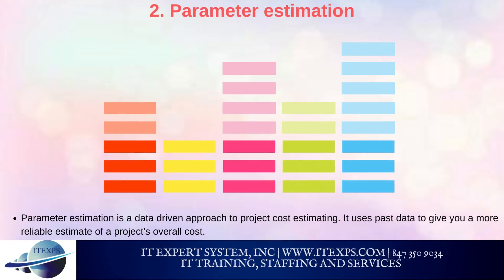Method 2: Parameter Estimation. Parameter estimation is a data-driven approach to project cost estimating. It uses past data to give you a more reliable estimate of a project's overall cost. First, calculate how much time will be spent on each task on your list. Next, add a cost figure by multiplying the hours of each task with each team member's hourly rate: task duration × employee's hourly rate = task cost. Once you have calculated the costs for every task, add them all up to reach an estimated total. Although this method is more time-consuming than a ballpark figure, it's also more accurate. It works best for projects that have concrete start and endpoints for tasks, like social media management.